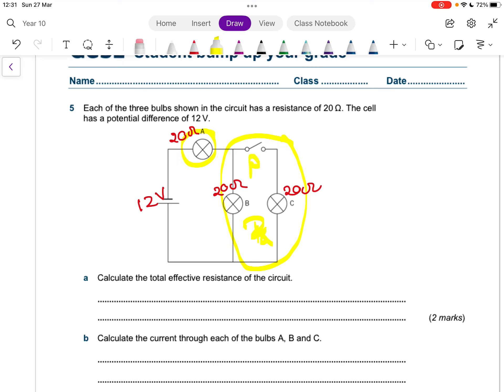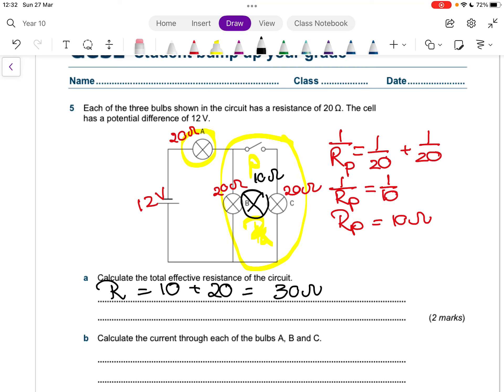I need to calculate that one first. So, 1 over R parallel is 1 over 20 plus 1 over 20. Now if you put that in your calculator, it's going to give you an answer of 1 over 10. But remember, that's 1 over R parallel. So now I have to turn it upside down, so my R parallel is 10. What that means for me is I could have taken these two light bulbs and replaced it with one light bulb that has a value of 10 ohms. So my total resistance through everything is the 10 from the parallel plus the 20, which means it's 30 ohms.